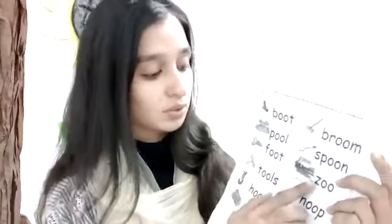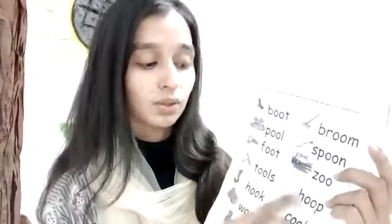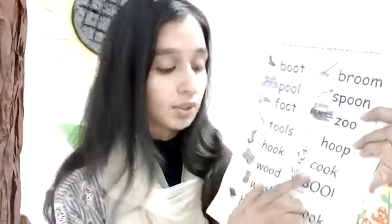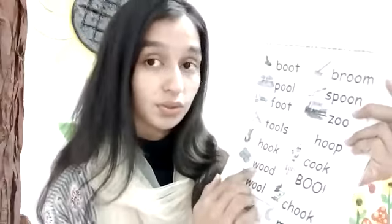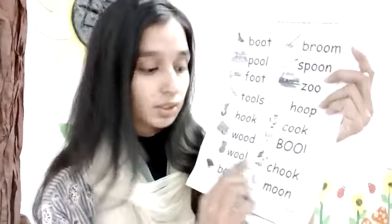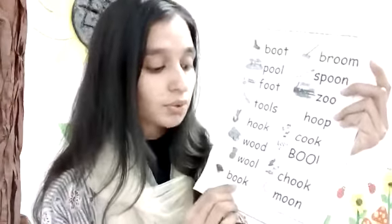Spoon. Foot. Zoo. Tools. Hoof. Hook. Cook. Wood. Boo. Wool. Chook. Book. Moon. All these words contain double O. So what was the topic today?